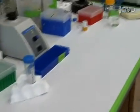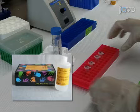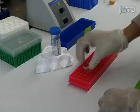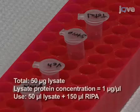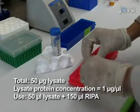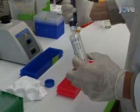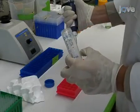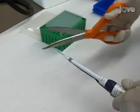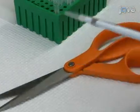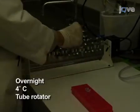Use a protein assay compatible with your lysis condition, for example the BCA protein assay from Pierce, to determine lysate protein concentration compared to a standard bovine serum albumin curve. Following this, prepare lysates for streptavidin affinity chromatography by filling 1.5 milliliter microfuge tubes with equivalent amounts of protein from each sample. In this experiment, we isolate biotinylated proteins from 50 microgram cell lysates. Add RIPA buffer containing protease inhibitors to a final volume of 200 microliters for each sample. Vortex streptavidin agarose beads vigorously, then using a 200 microliter pipette tip with the end cut off, pipet 20 microliters of streptavidin beads into each tube. Vortex the tubes and incubate overnight at 4 degrees Celsius on a tube rotator.